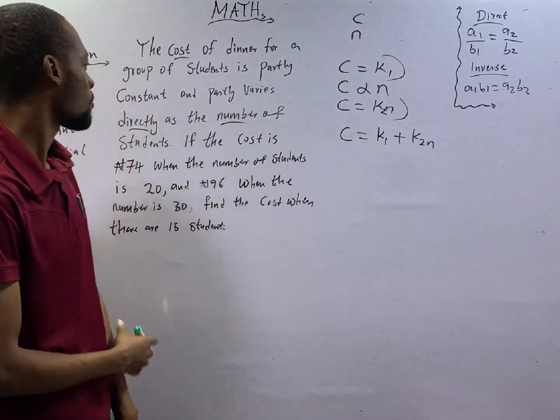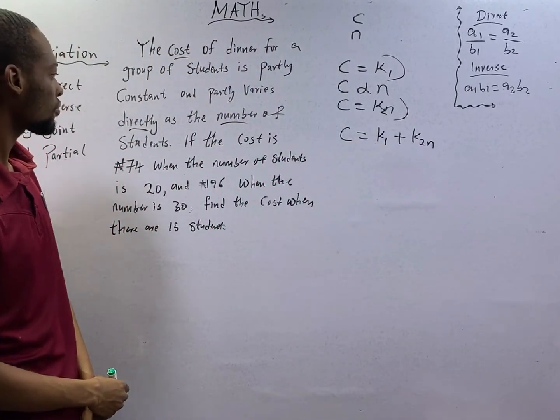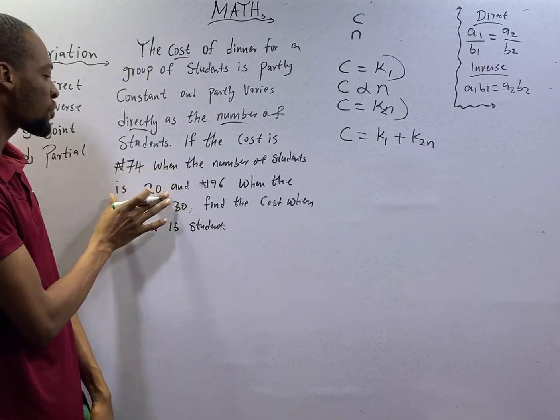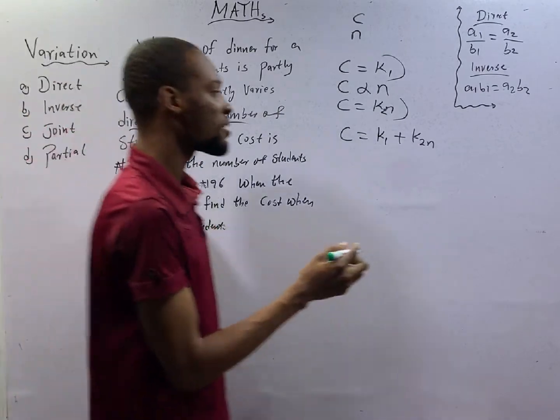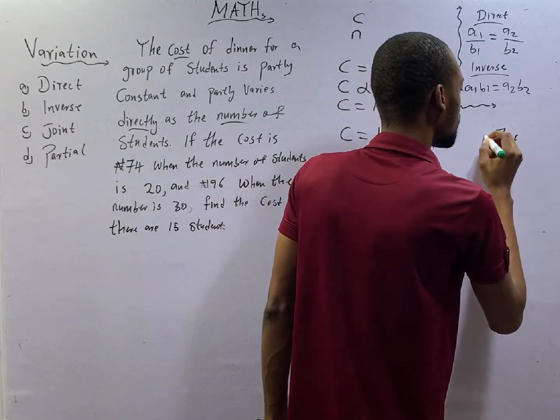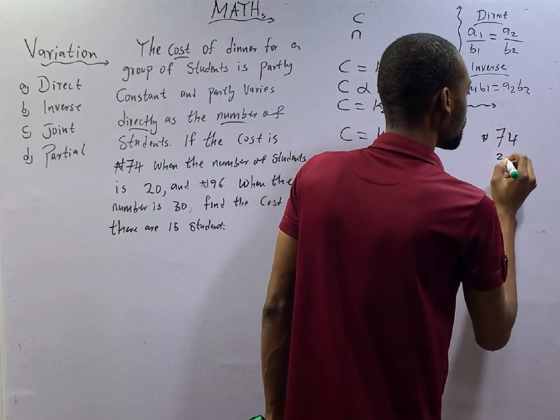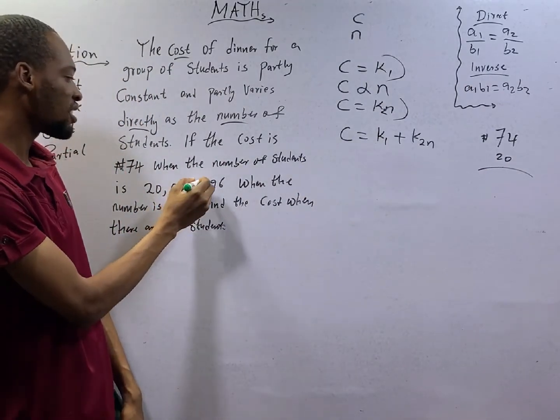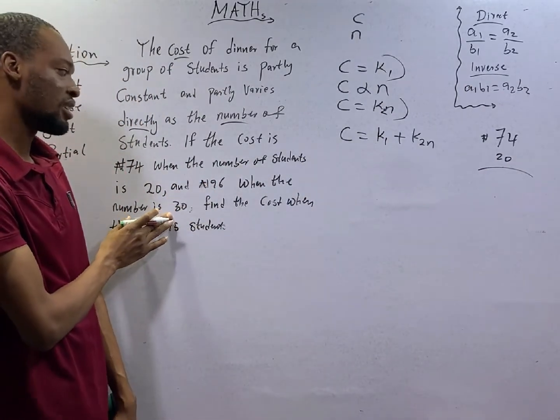We are told that if the cost is 74 Naira while the number of students is 20. The first case is 74 Naira, 20. The second case is 96 Naira when the number of students is 30. So 96 and 30.